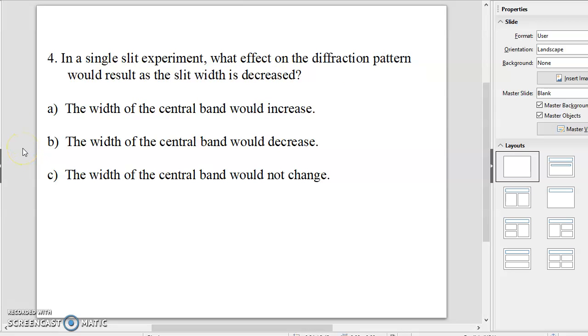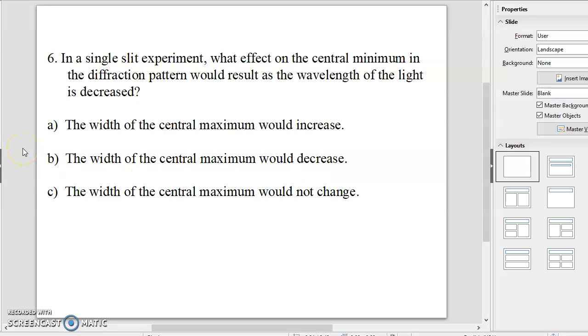Number six. In a single slit experiment, what effect on the central minimum in the diffraction pattern would result as the wavelength of the light is decreased? And the answer to that one is the width of the central maximum would decrease.